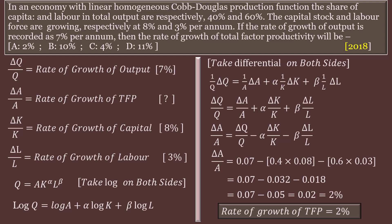Further simplifying: 0.07 minus 0.05 equals 0.02. The final value is in decimal form. Since we converted percentage values to decimal earlier, we now convert back: it is 2%. The rate of growth of total factor productivity is 2%. This is the answer. This lecture ends here. We shall meet in the next video.